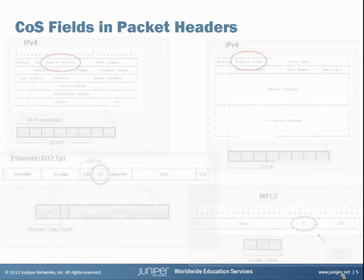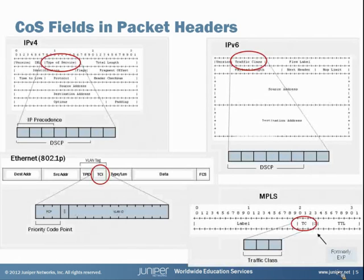It's worth taking a quick look at the fields in the packet headers where CoS is supported and implemented. On an IPv4 packet, towards the top left, you can see there's a type of service byte, or TOS byte. Originally this was implemented with the first three bits as an IP precedence field. However, over time it became necessary to have more variations for class of service, and so it was renamed to be the DiffServ code point — six bits long, with a fair number of variations to use.